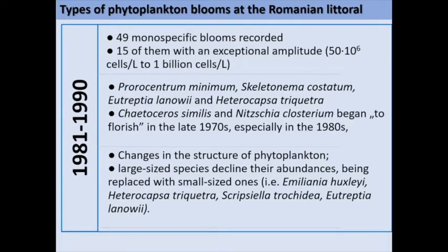During 1981–1990, the most monospecific blooms were recorded — 50 of them, 15 of which were of exceptional amplitude from 50 million cells per litre to 1 billion cells per litre. The most important species were Procentrum minimum, Skeletonema costatum, Eutreptiella gymnastica, and Heterocapsa triquetra. Chaetoceros similis and Nitzschia crossea began to flourish in the late 1970s, especially in the 1980s. There were also observed changes in the structure of phytoplankton: large-sized species declined in abundance, being replaced by small-size species such as Emiliania huxleyi, Heterocapsa triquetra, Scrippsiella trochoidea, and Pseudo-nitzschia nova.